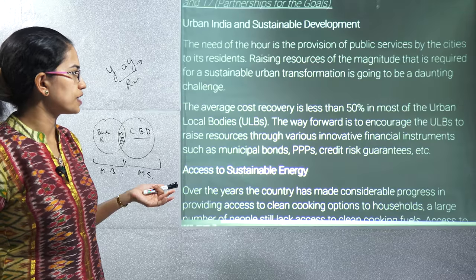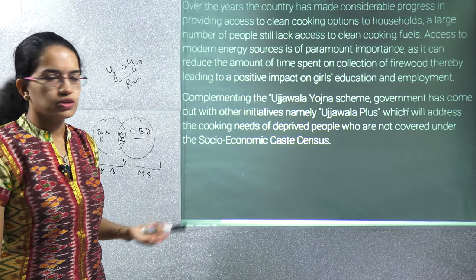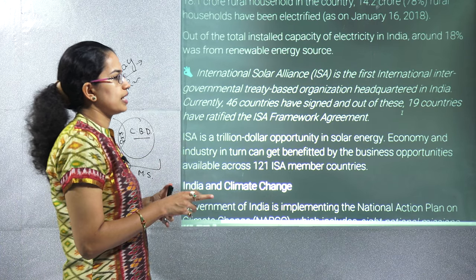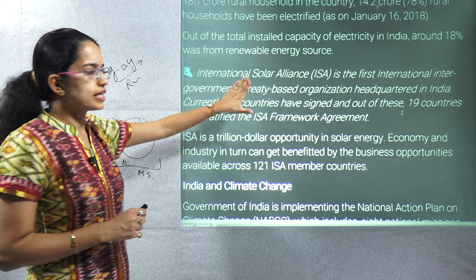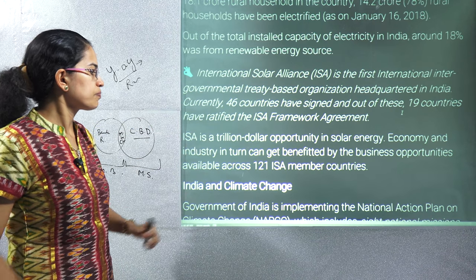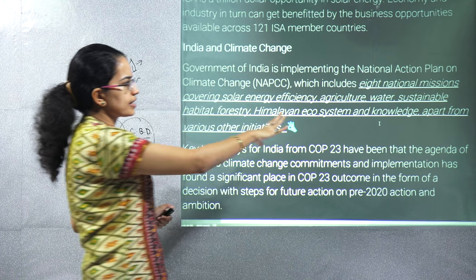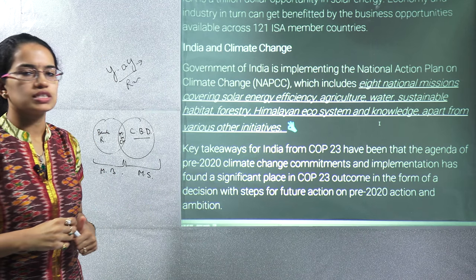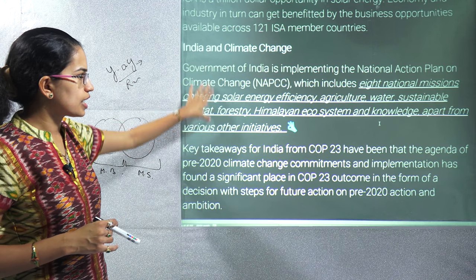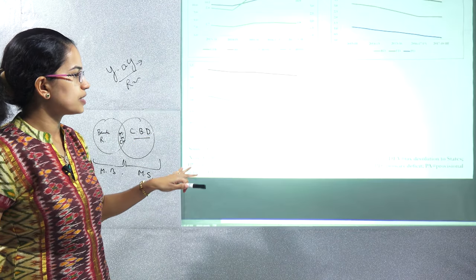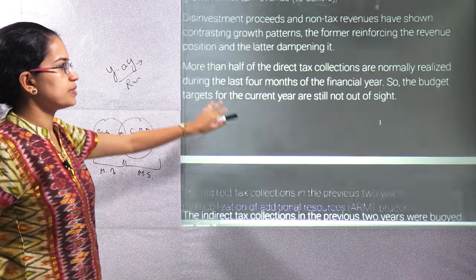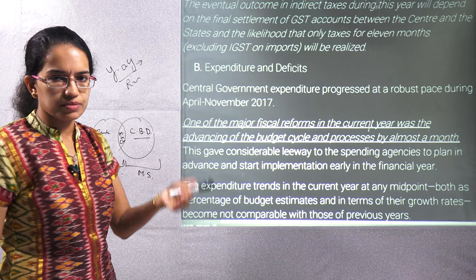On access to sustainable energy, we cover the UDAY scheme, Ujjwala Yojana, and the Ujala Plus scheme. The International Solar Alliance is very important — it is the first international intergovernmental organization set up with headquarters in India; 46 countries have signed it and 19 have ratified it. There are eight national solar missions covering solar energy efficiency in sectors including agriculture, water, sustainable habitat, forestry, and Himalayan ecosystem. India is among the six nations most vulnerable to climate change.